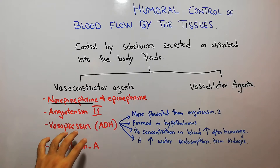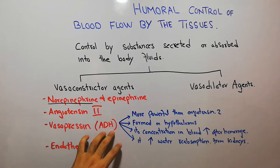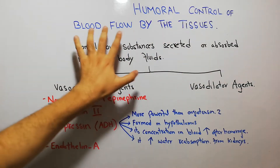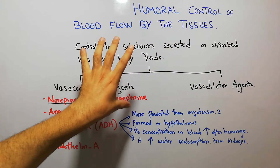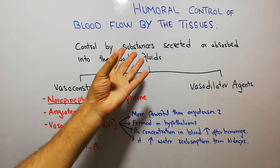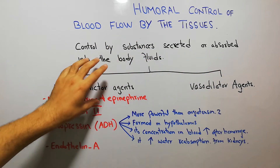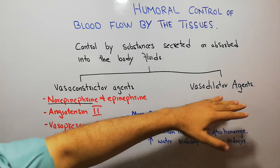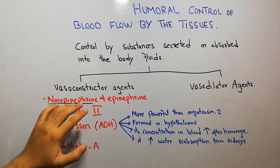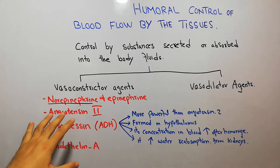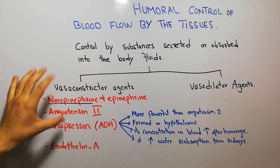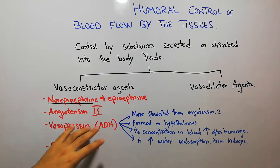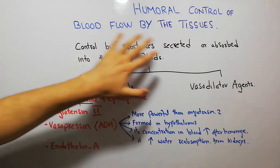Today we are going to discuss vasopressin or antidiuretic hormone as a vasoconstrictor agent. We are discussing the humoral control of blood flow by the tissues. Humoral control is by substances or hormones secreted or absorbed into the body fluids, classified as vasoconstrictor and vasodilator agents. We have already discussed norepinephrine, epinephrine, and angiotensin-2 as vasoconstrictor agents. Now we are going to discuss vasopressin in relation to the humoral control of blood flow.